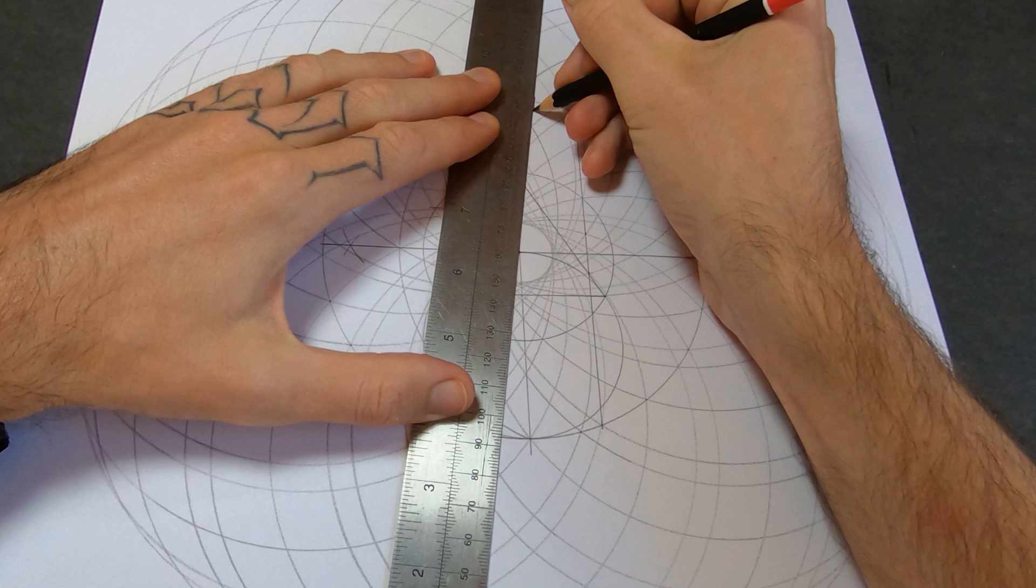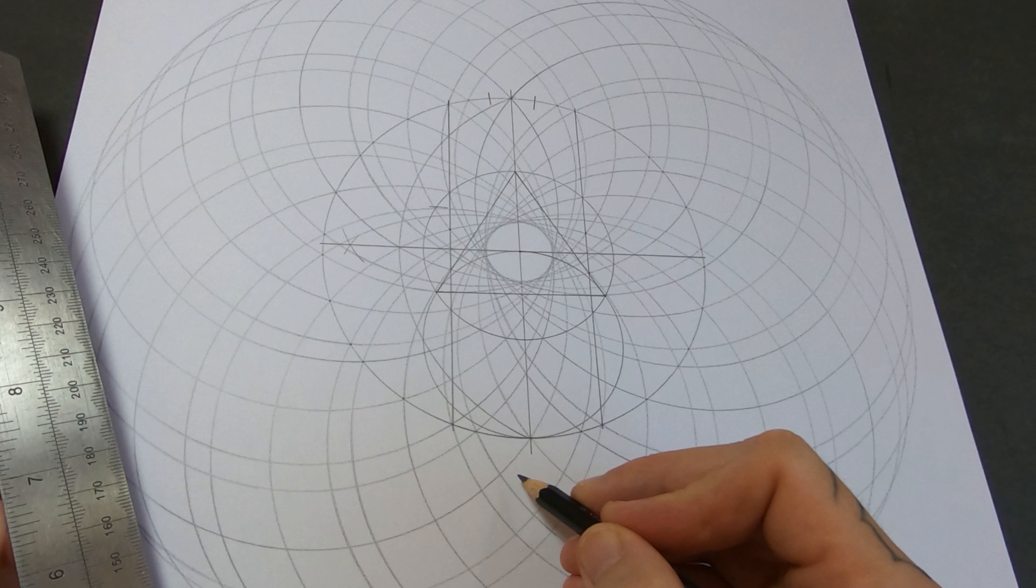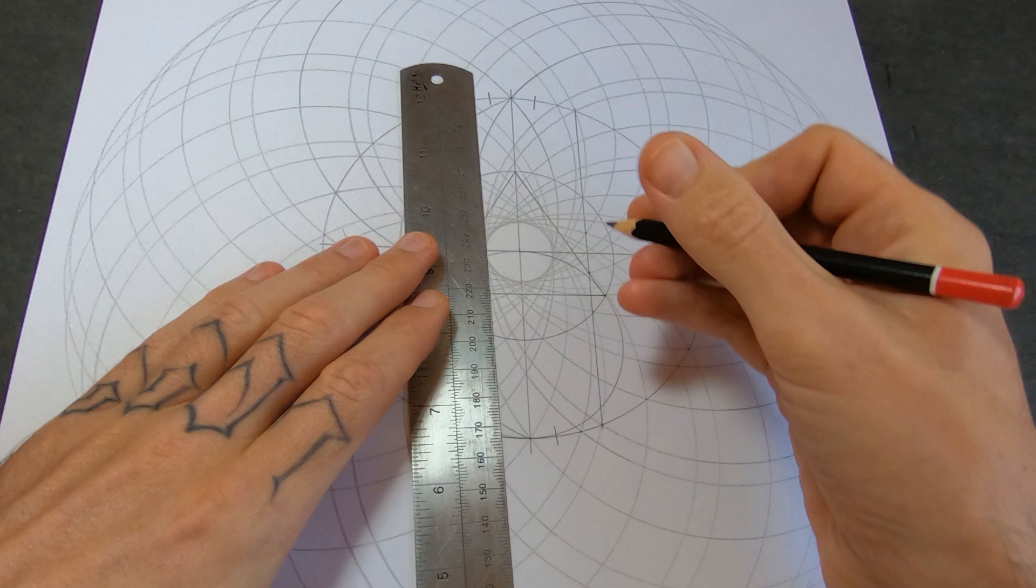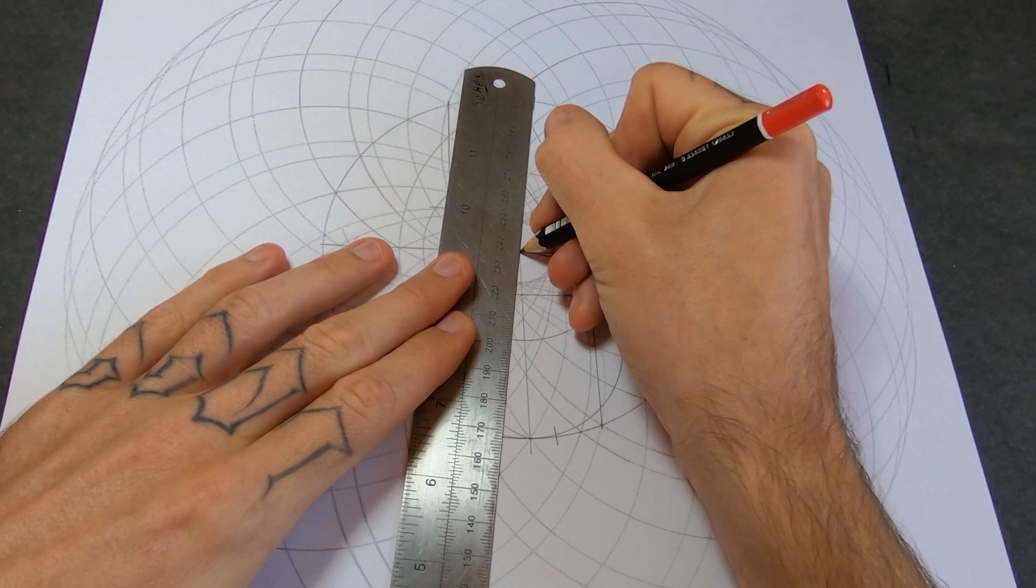Do the same thing on the bottom, on these triangles, just connect the tip of those triangles to the center. You don't actually have to draw the whole line, we just need a mark where it crosses the circle. Those four marks are going to be the starting points for the last 20 circles.